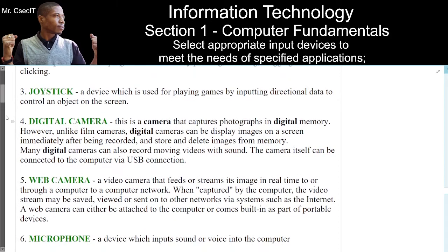Number 4. Digital Camera. This is a camera that captures photographs in digital memory. However, unlike film cameras, digital cameras can display images on a screen immediately after being recorded, and store and delete images from memory. Many digital cameras can also record moving video with sound.